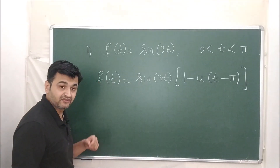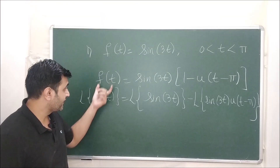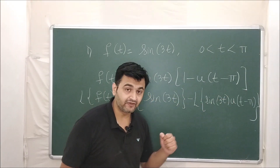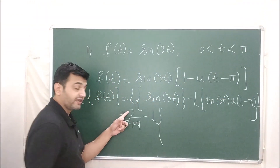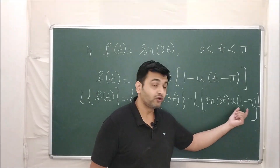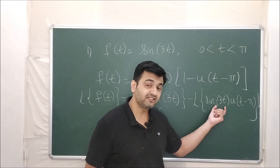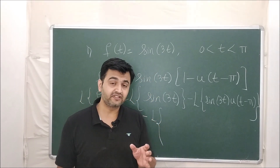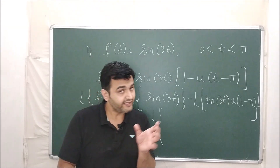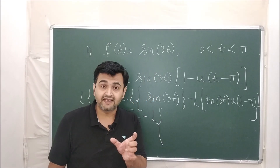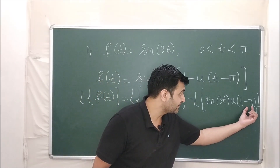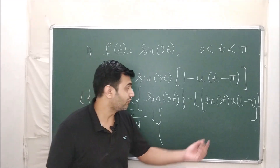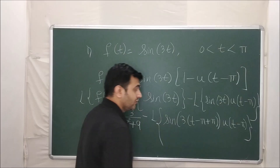Now find the Laplace. Applying Laplace on both sides: L{f(t)} = L{sin(3t)} − L{sin(3t) · u(t − π)}. The first term is straightforward: 3/(s² + 9). For the second term, whenever you have a Laplace of a unit step function multiplied with another function, the second shifting theorem helps. But for the second shifting theorem you need the form f(t − a) · u(t − a), so you need to bring (t − π) into the picture.